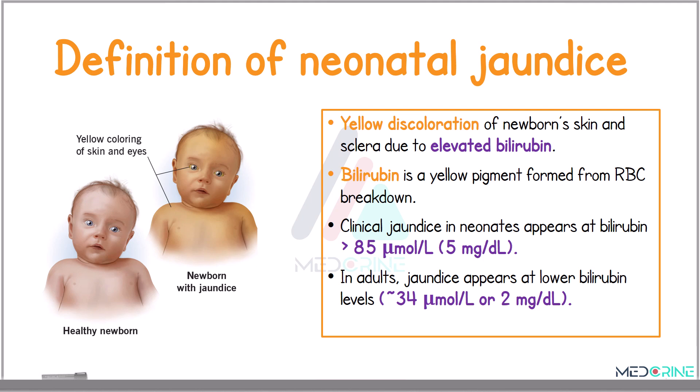In adults, jaundice appears at a slightly lower bilirubin level of about 2 mg/dL.